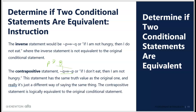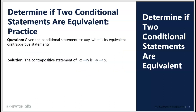Only the contrapositive is equivalent. Given the statement if not X then Y, what is its equivalent? You switch the order — Y on one side and X on the other. You switch the negation state: Y was not negated so it becomes negated; X was negated so it's no longer negated. So the answer is if not Y then X.